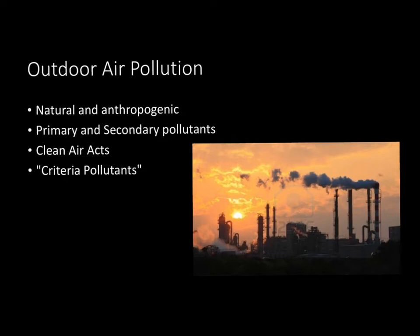Now let's look at criteria pollutants. If you go to page 472, there are six criteria pollutants listed. Look those over in the book and read the small paragraph explanations on them, because they are very solid and not really worth repeating here. I would just go to page 472 and look those over.